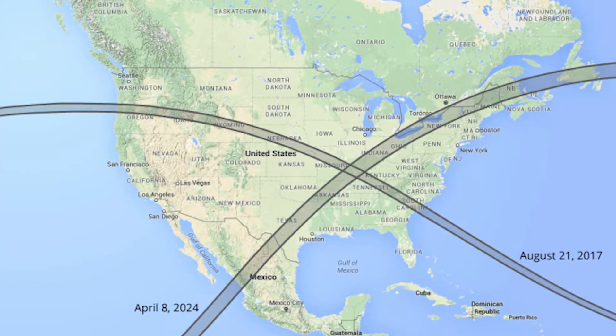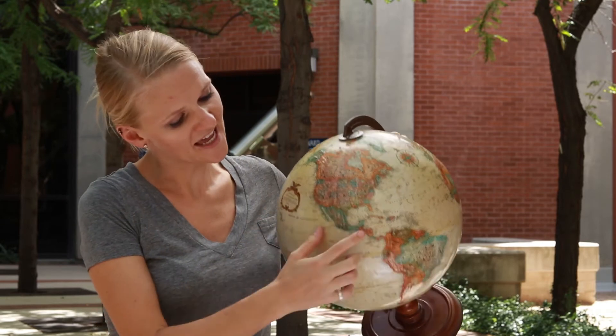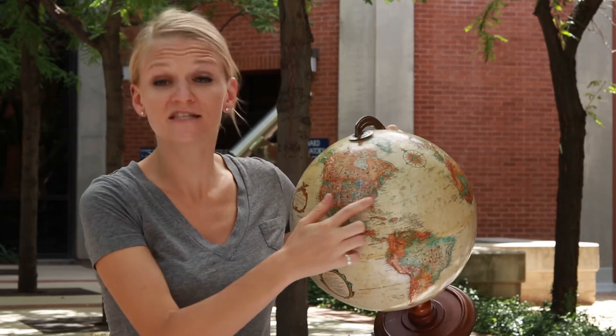If you've gotten really excited about eclipses, you may have looked ahead to the next eclipse that'll be visible from North America happening in 2024. The eclipse happening this year in 2017 starts in the northwest near Oregon and ends in the southeast. The eclipse happening in 2024 starts in the southwest near Mexico and ends in the northeast. Why is that?